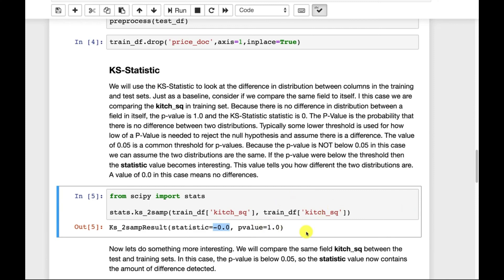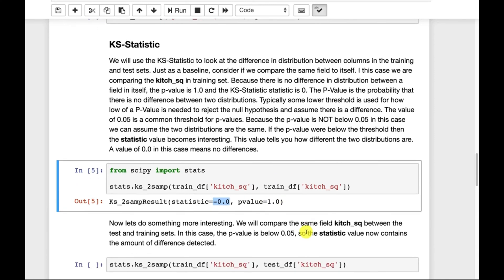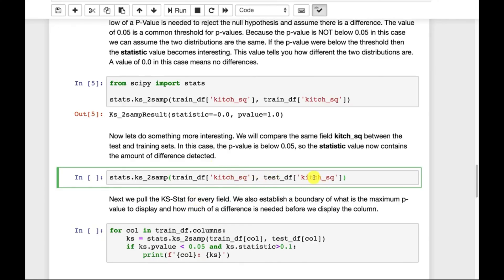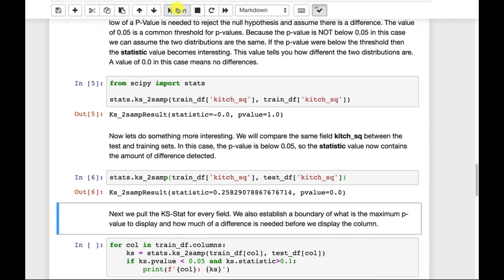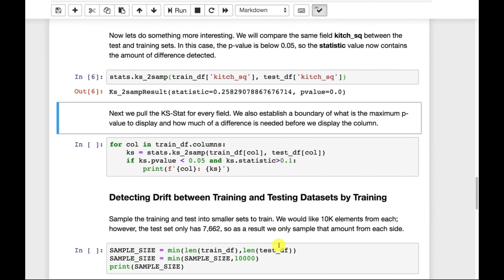Now let's look at the same column, but we're looking at the column in the training set versus the test set. Now the KS statistic is a little different. Our p-value is very low, 0. And the statistic shows us that there's a 0.25 difference between them. So this is interesting. The distribution of the kitchen square feet is quite different between the training set and the test set. The next thing we're going to do is essentially run this on all the columns.